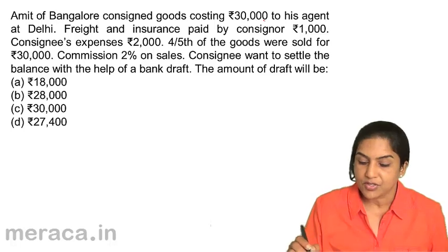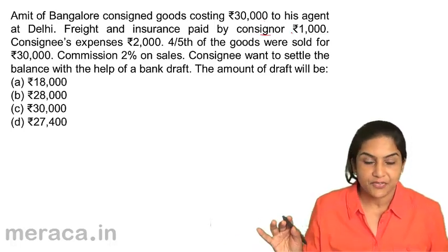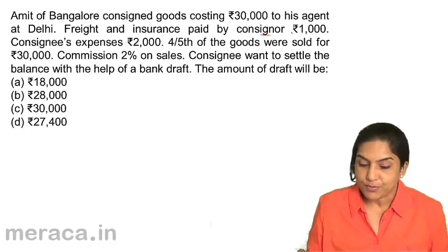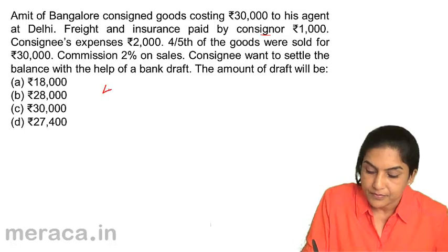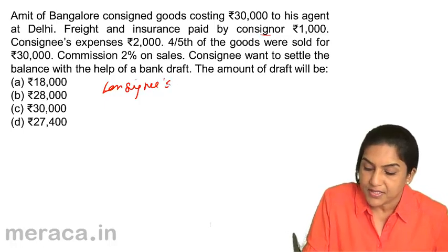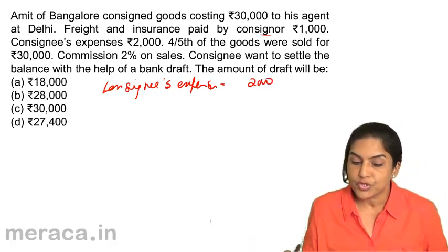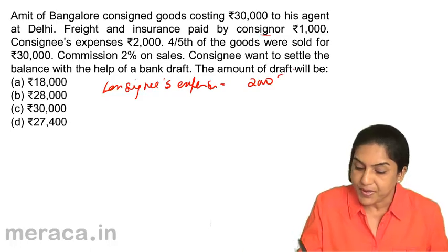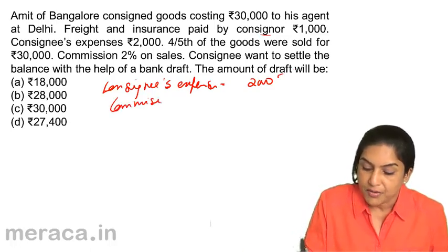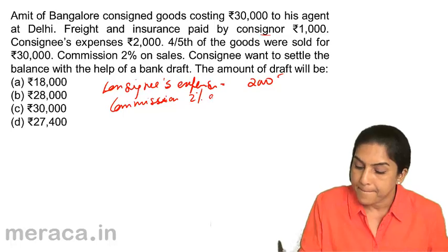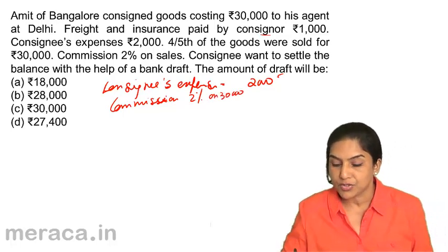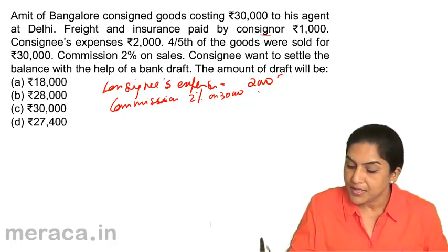Goods are sent costing 30,000. Freight and insurance is paid by the consigner — we are not concerned. Consignee's expenses are Rs. 2,000. Four-fifths of the goods were sold for Rs. 30,000. Commission is 2% on sales. So the consignee has to get these expenses and commission. 2% of Rs. 30,000 would be Rs. 600.